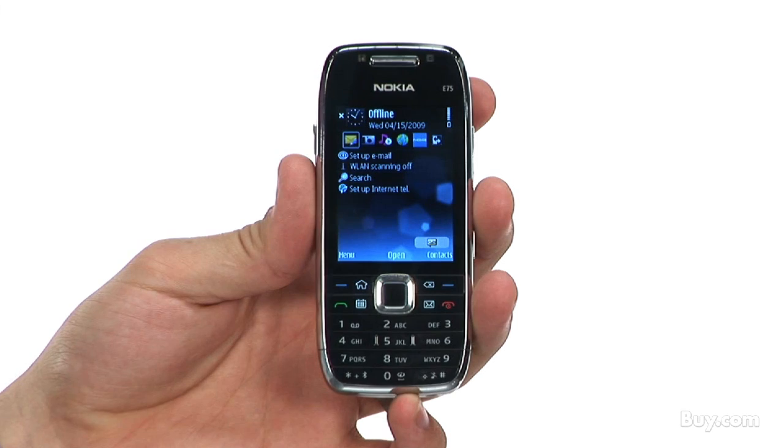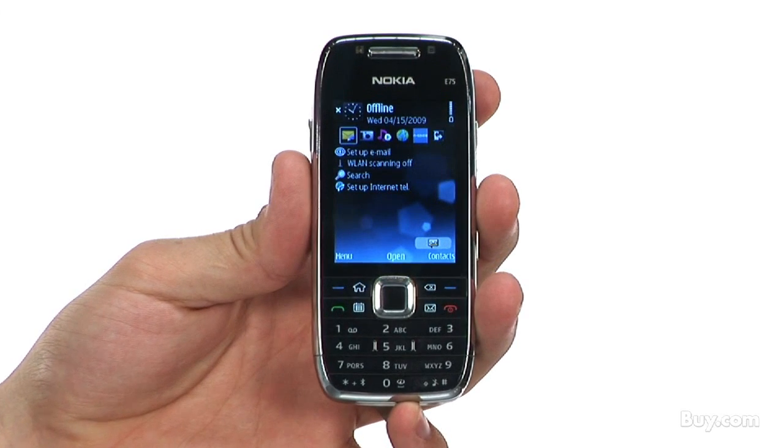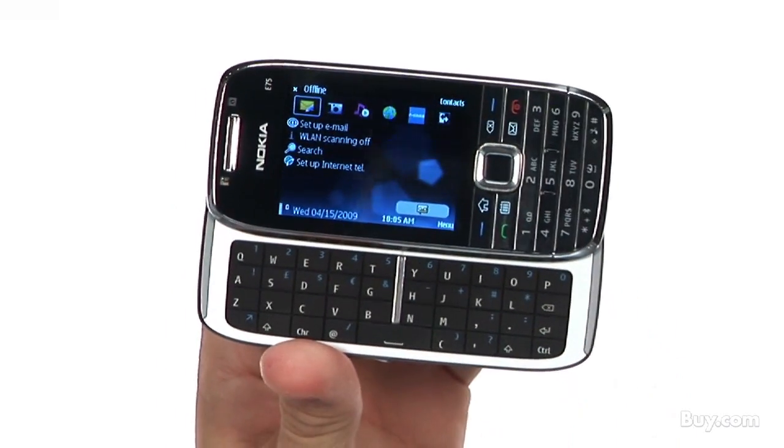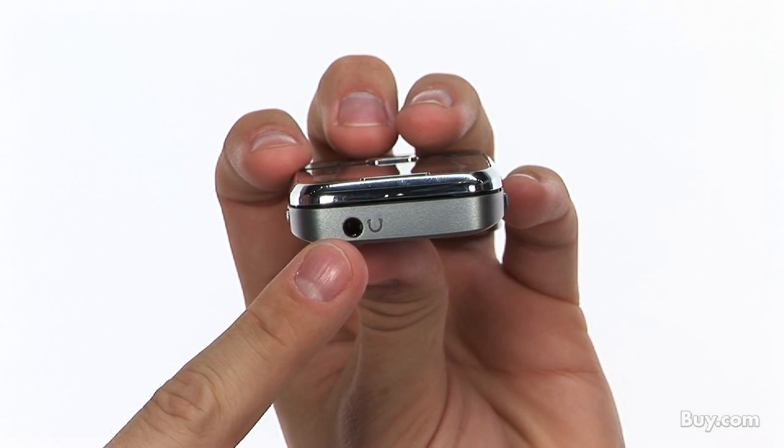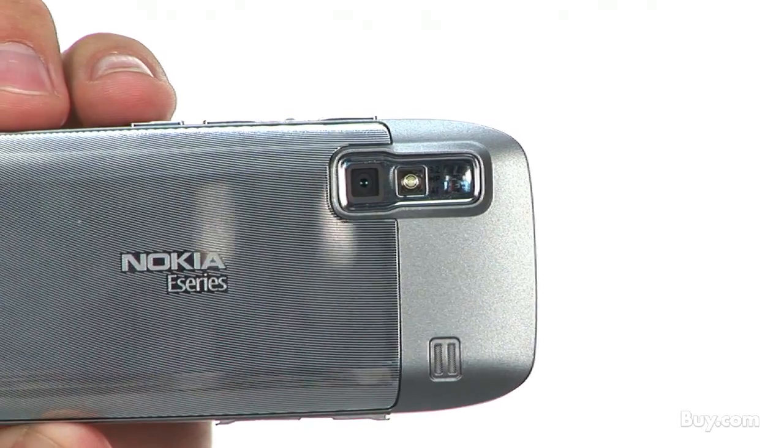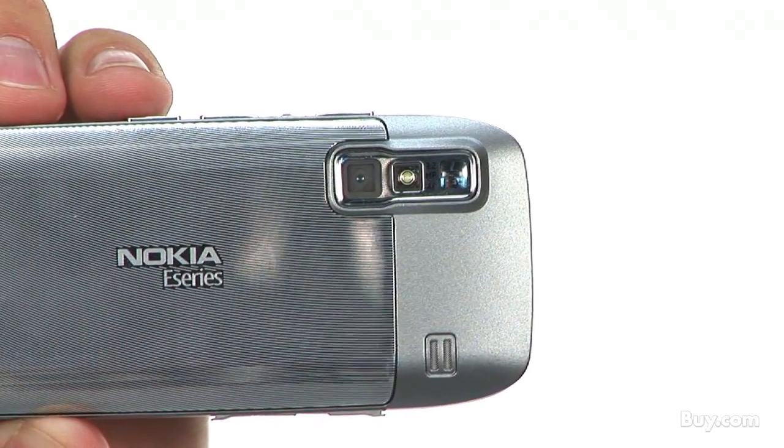The Nokia E75 is a sleek device for both the business user and the casual consumer. It features a slide-out QWERTY keyboard for convenient messaging, a 3.5mm headphone jack to listen to your favorite music or watch movies straight on your device, and a 3.2 megapixel camera with flash to capture memories on the go.